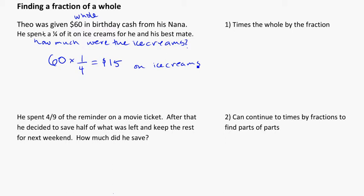We can go further with this problem, taking it to a more advanced word problem. Continuing on, he spent four ninths of the remainder on a movie ticket. So from the $60, he's spent 15 on ice cream. What's left after he spent 15 on ice cream? 60 minus 15 gives us $45 which he's got left after ice cream.